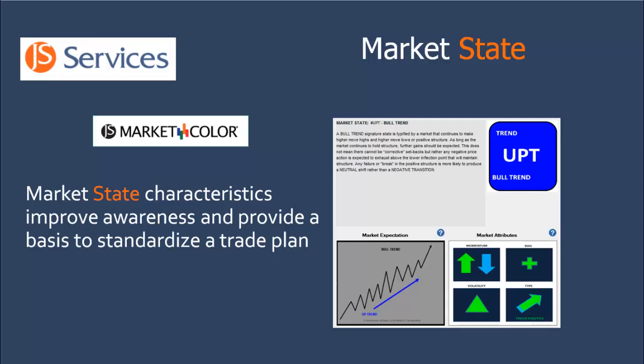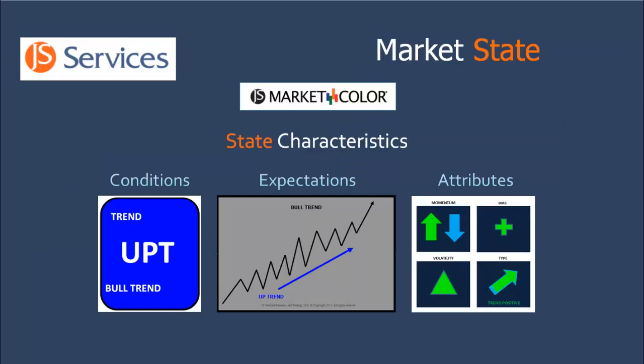The key is to know the facts associated with the underlying state. By knowing the market state characteristics, it will improve your awareness and provide a basis to standardize a trade plan. Market state is the playing field that the drama of the trading day is going to play out on. The nuances and tells, or facts associated with the state, are the foundation to standardize your method. Knowing the facts improves awareness, making it easier to sync your gut feel with real-time events. JS Services market color analytics identify the current market state and its unique characteristics. These characteristics provide insight to how price action should behave within the session so tactics can be aligned to these facts.